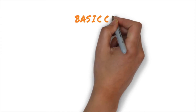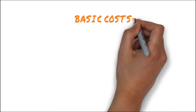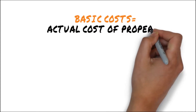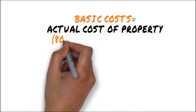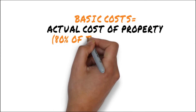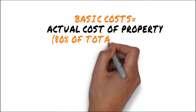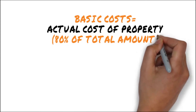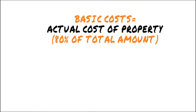Your main expense is the basic cost. This is the actual cost of the property and it normally comes around to 80% of the total amount. The basic cost is paid in parts and most builders will ask you to deposit almost 10 to 20% of this cost at the time of booking.